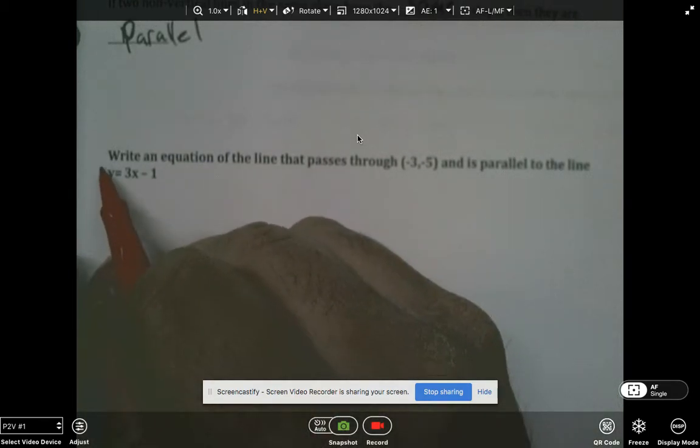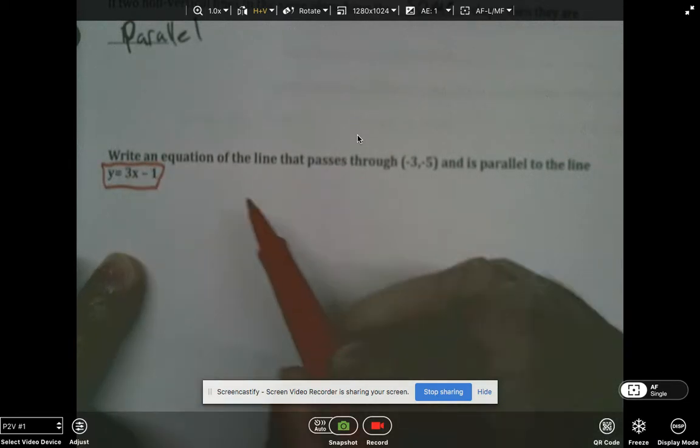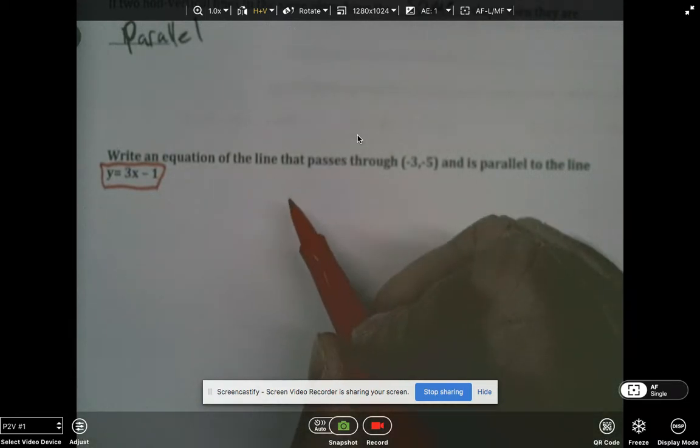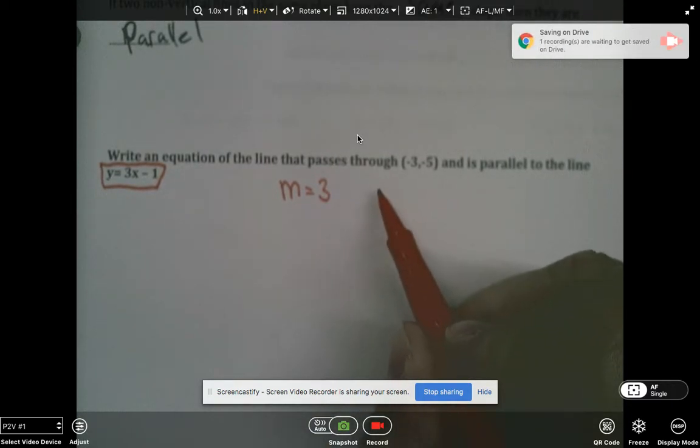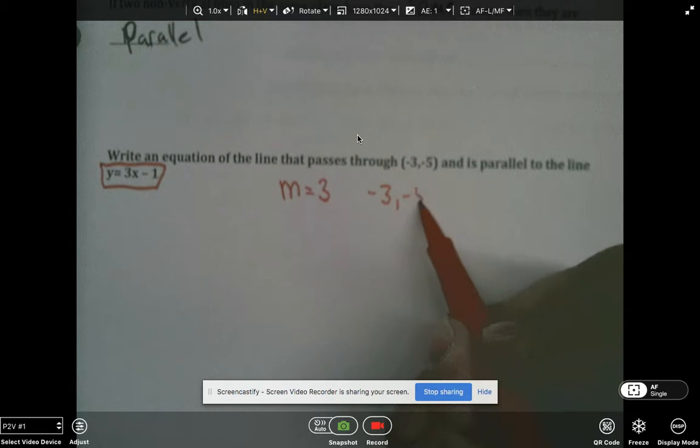Raise your hand. If we want it to be parallel to this equation, what should the slope be for this new equation we're writing? Yeah, it has to be 3 because we want it to be the same. So then we have negative 3 comma negative 5.